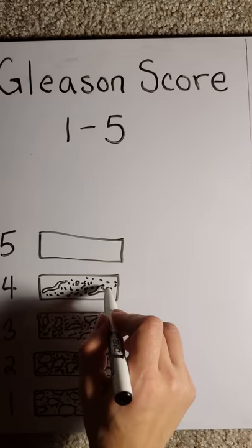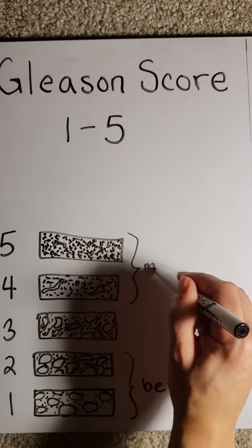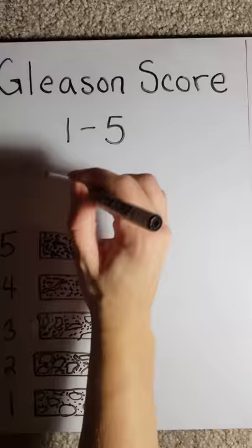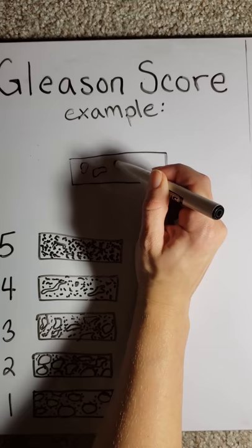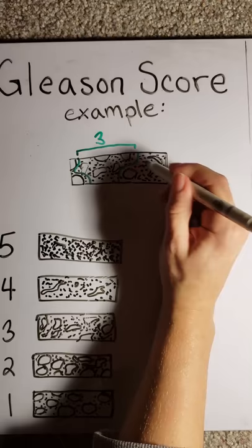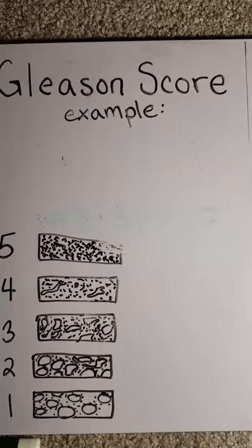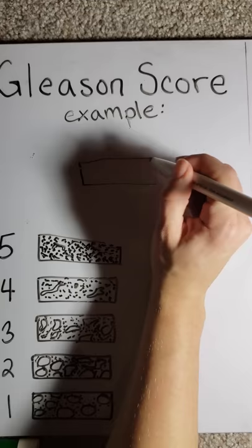Each tissue sample is given a grade from 1 to 5, with 1 and 2 considered benign and 5 being the least differentiated cell morphology. This is an example of a slide a pathologist would grade. The most prevalent type here is grade 3, with some grade 4. The Gleason score would be 3 plus 4 for a total of 7.